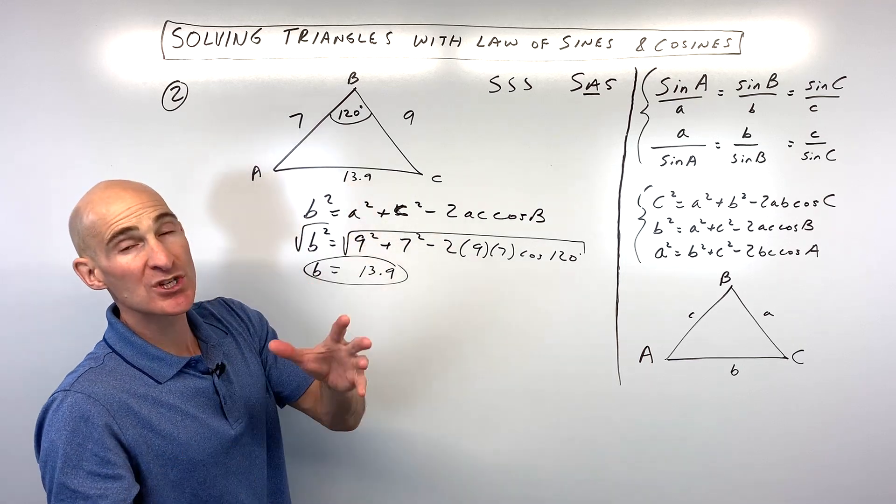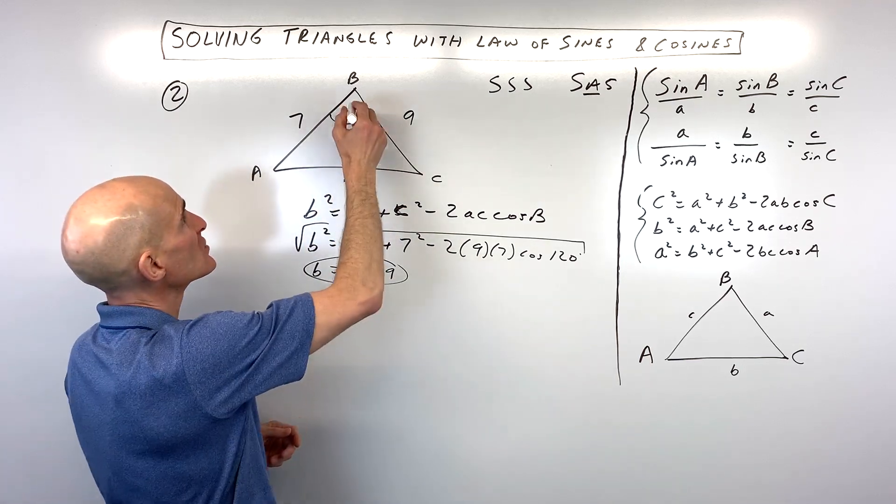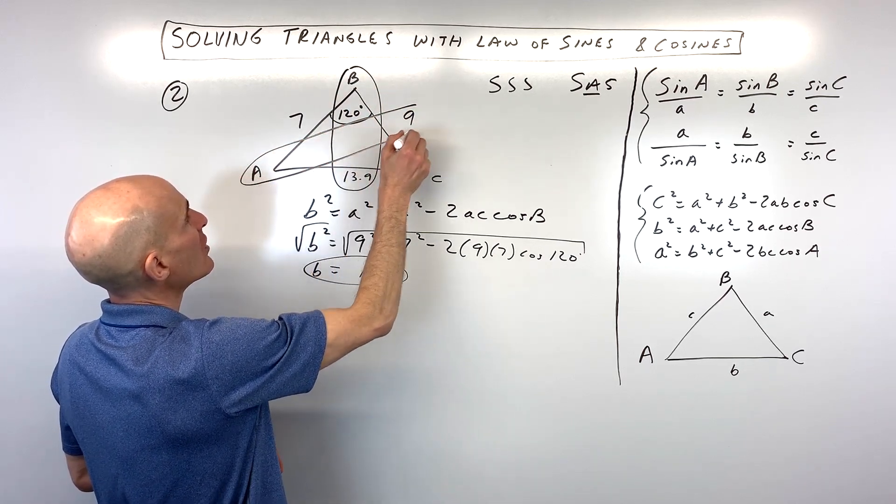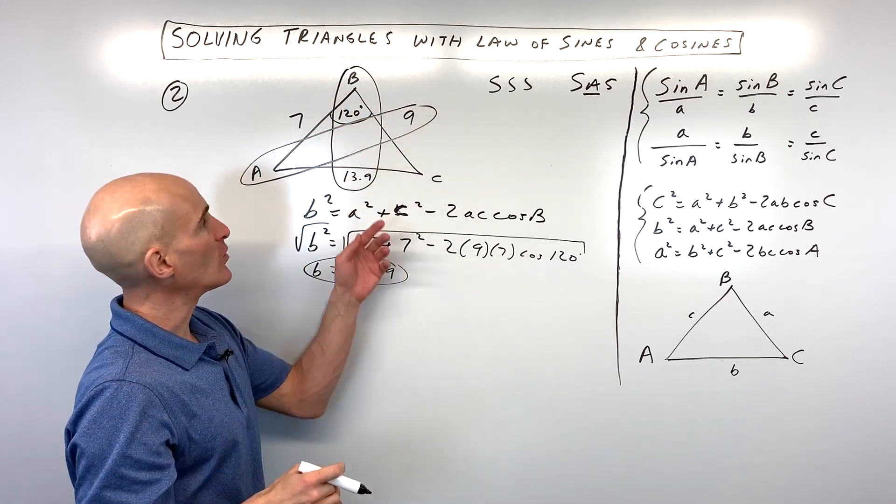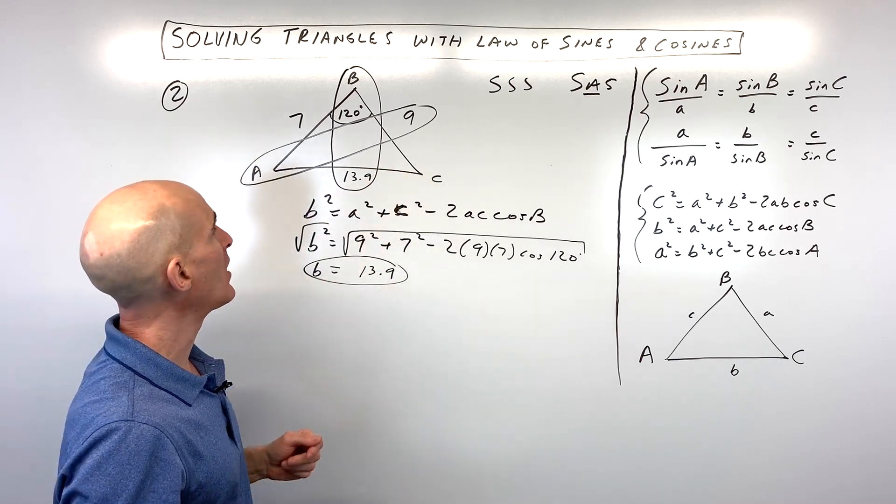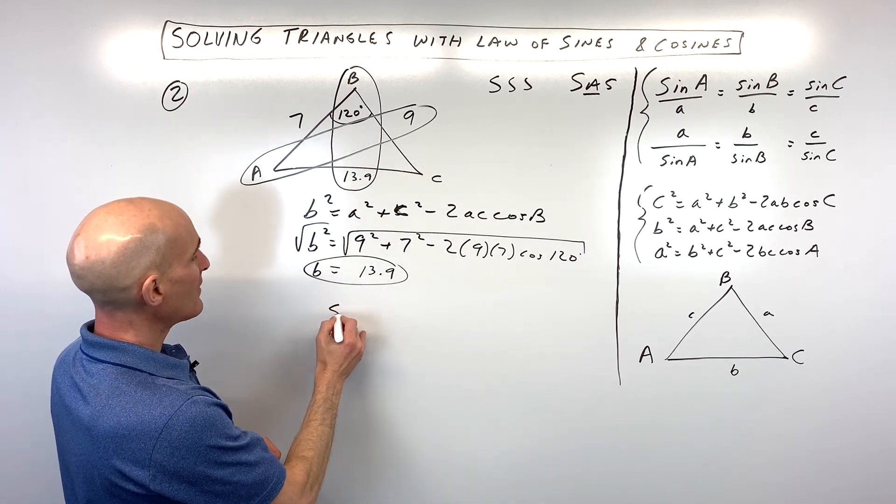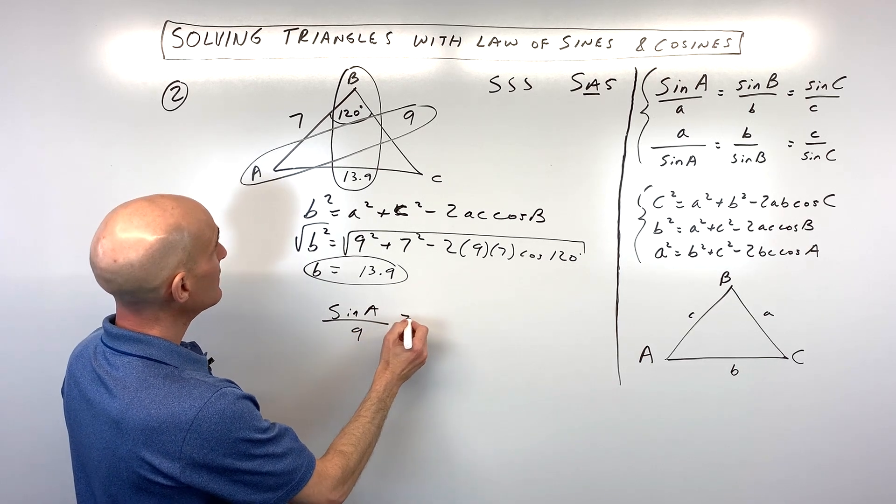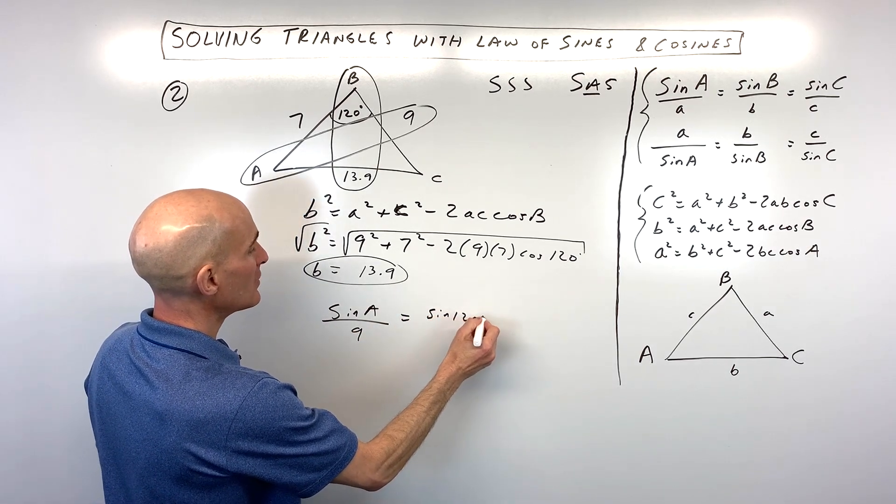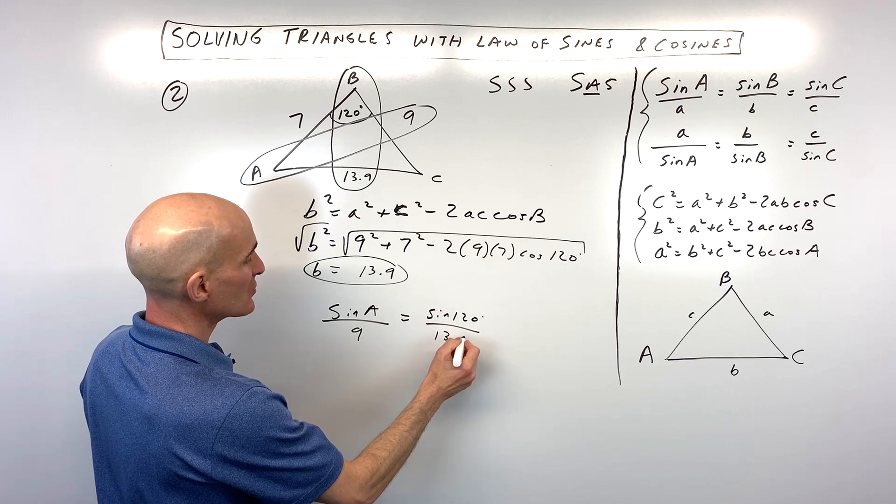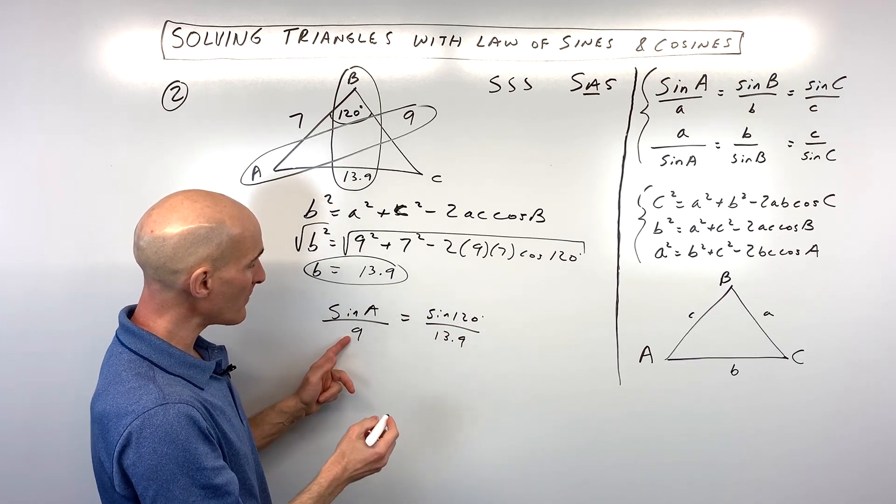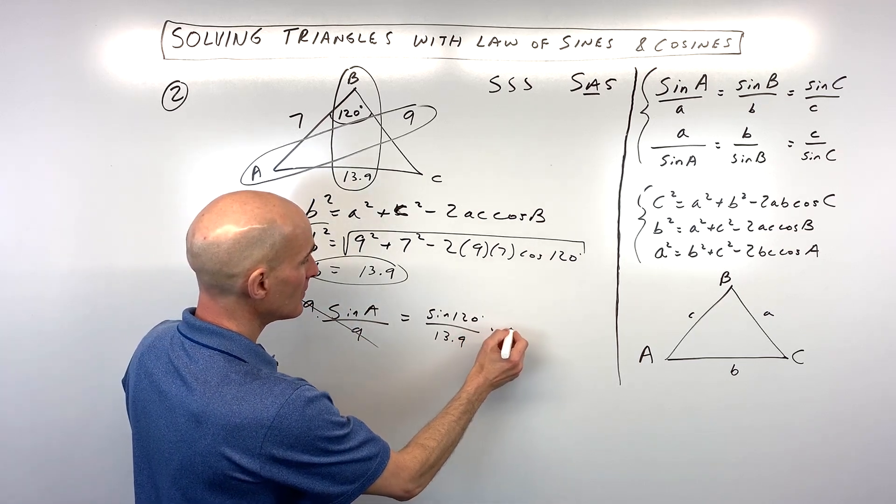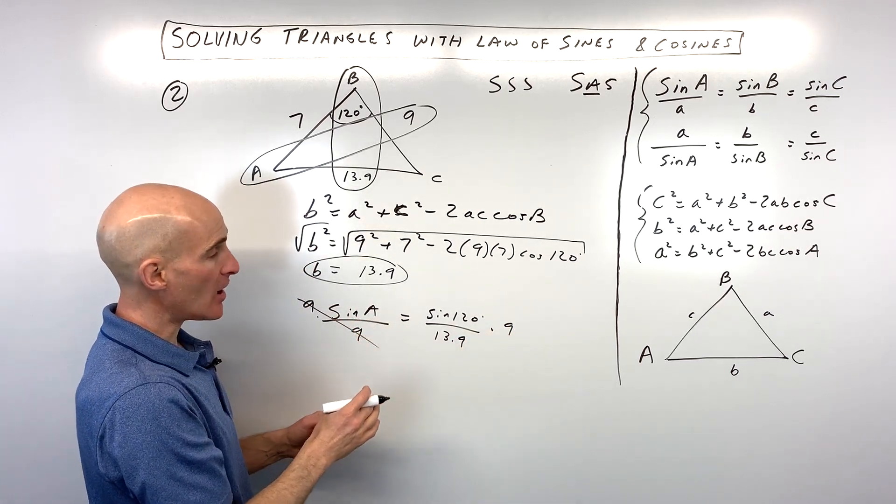So, now what we're going to do is we can switch gears. We can go over to the law of sines because you can see we've got a pair now. We've got 120 and 13.9, and we're going to solve for angle A and side 9. We could do angle C first as well, but let's just do angle A. So, we've got sine of angle A over its side opposite, which is 9, equals the sine of 120 degrees over its side opposite, which is 13.9. Now, here what I'm going to do, I'm going to get sine of A by itself. I'm going to multiply both sides by 9 to get sine of A by itself.